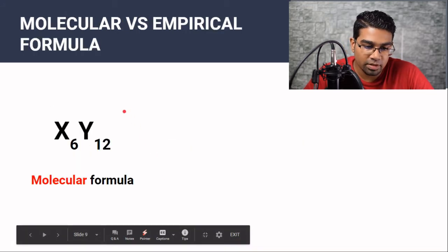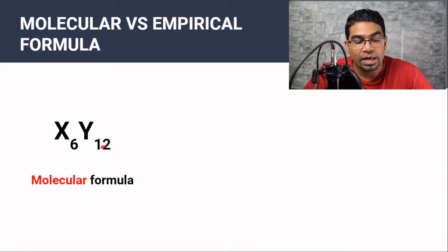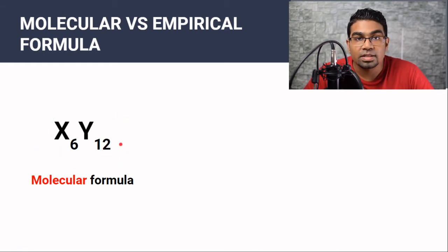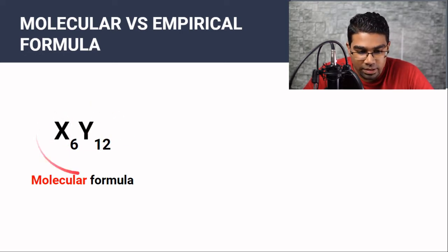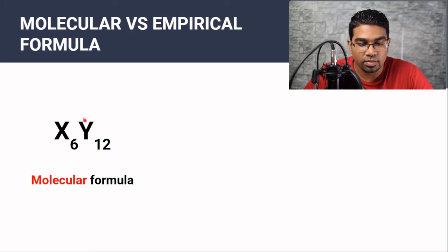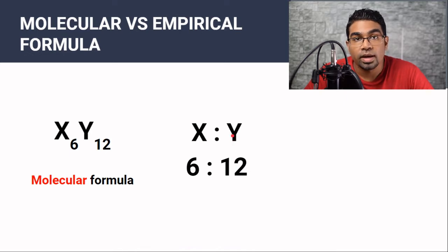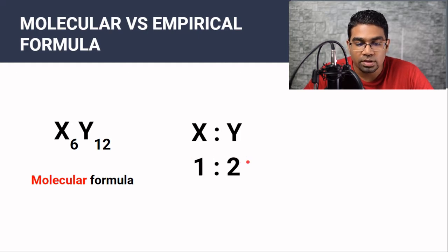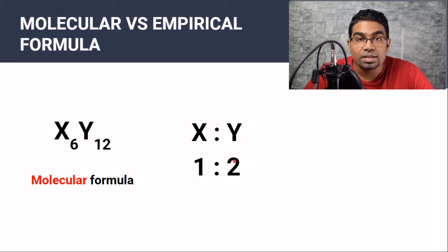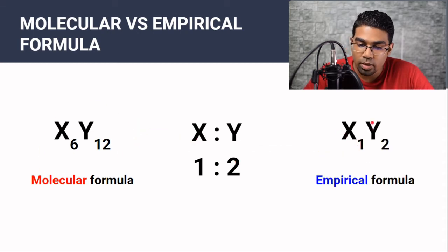Let's look at an example. Say we have the molecule X6Y12 — this is the molecular formula. It tells us there are exactly 6 atoms of X and 12 atoms of Y in this molecule. If we take the ratio 6 to 12 and find the simplest form — both divided by 6 — we get 1 to 2. So the empirical formula is X1Y2.